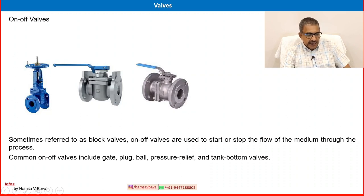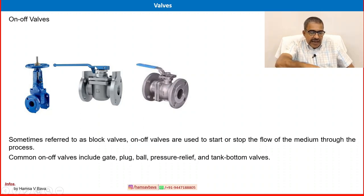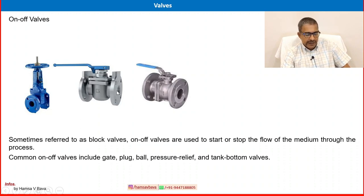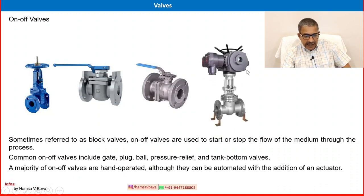The gate valve has a circular handle and the spindle moves up and down — the opening and closing element moves vertically. On the plug or ball valve, you move the handle rotationally. So the difference is in how the closing element moves; we will cover this in detail in coming sessions. Gate valve, plug valve, ball valve, and also pressure relief valve — that is in the next slide.